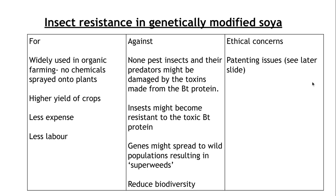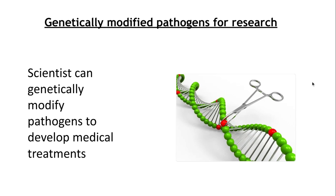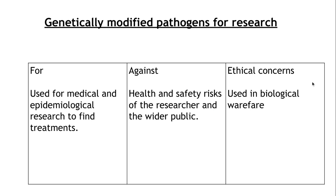The main ethical issues here are patenting issues, which we'll look at in a couple of slides. The next area is genetically modifying pathogens for research, where scientists can modify pathogens to help develop medical treatments and study what would happen to a pathogen during manipulation and how we can prepare for that. This is really helpful for epidemiological research — studying how pathogens could change in the future and how we could prepare. However, there are big health and safety risks for the researcher and the wider public, as modifying pathogens could create something with pandemic-scale potential. The main ethical concern is that we could technically use this for biological warfare.